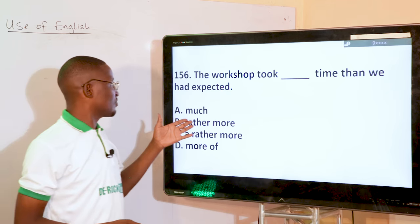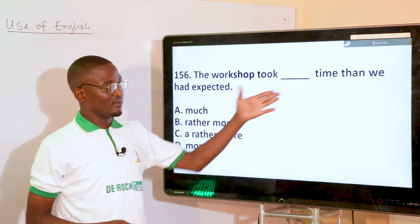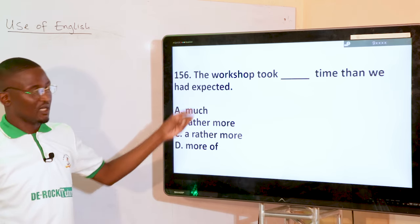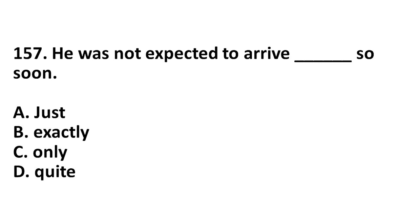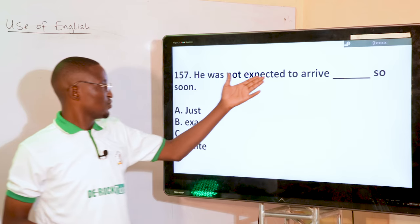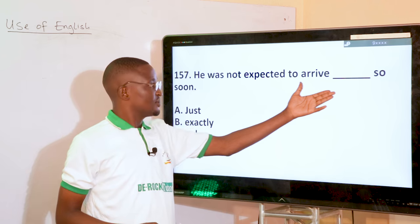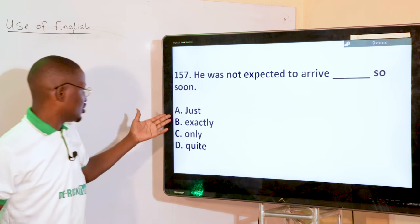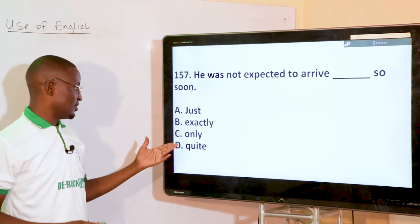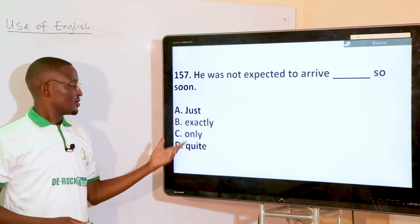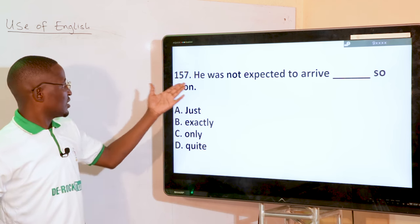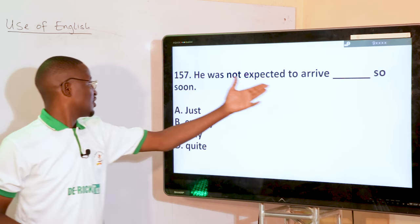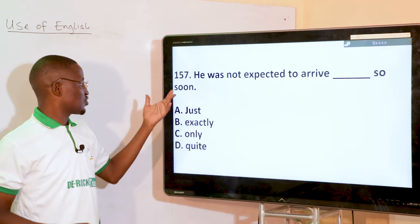It was not expected to arrive dash so early. Which word should precede 'so'? Just, exactly, only, quiet. It was not expected to arrive just so early — 'just' is the correct answer.